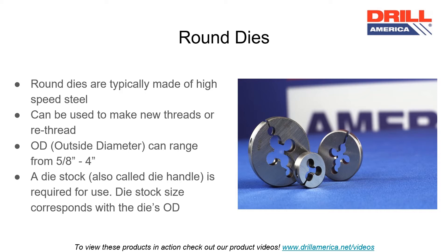Round dies are typically made of high-speed steel and can be used to make new threads or re-thread. The OD of the die, short for outside diameter, can range from 5 eighths to 4 inches. A die stock, also called a die handle, is required for use, and the die stock size corresponds with the die's OD.